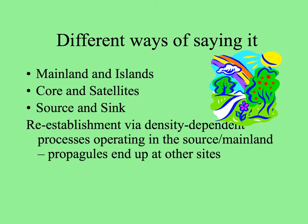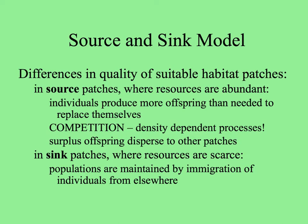The core population produces many new individuals that compete with each other, so some disperse. The propagules end up at other sites. In the source and sink model, the differential quality of habitats comes into play. Source patches have abundant resources — everything needed for the population to grow. With excess individuals competing, offspring disperse to sink patches where resources are less abundant. It's a harder life there, and populations periodically go extinct but are maintained by immigration.